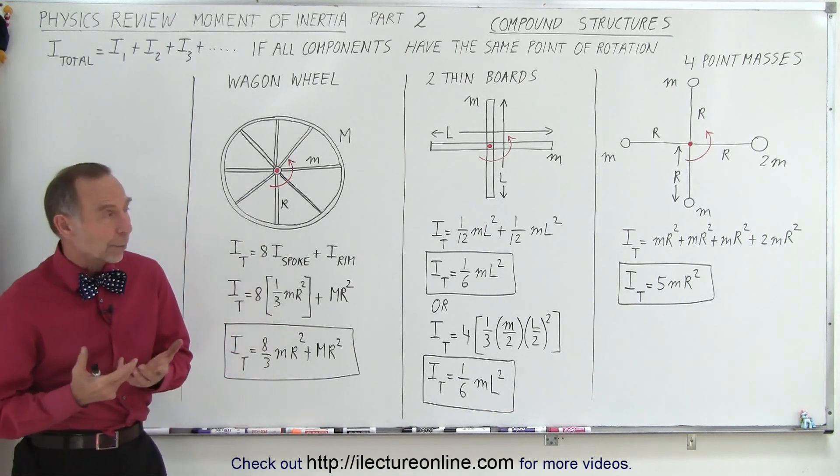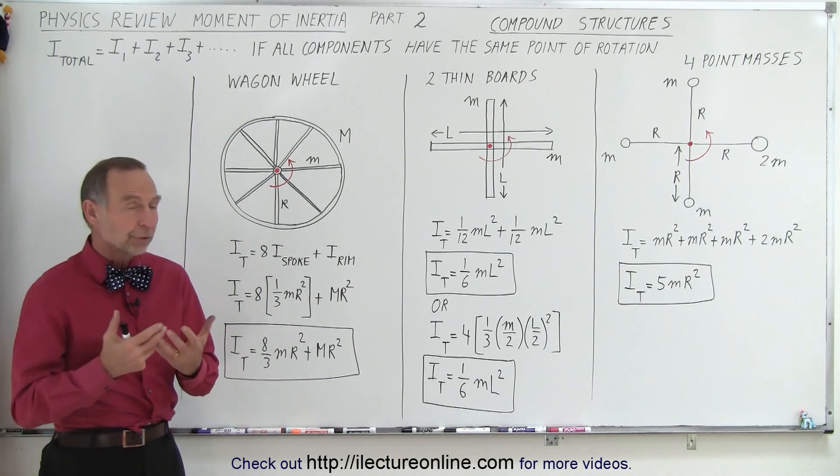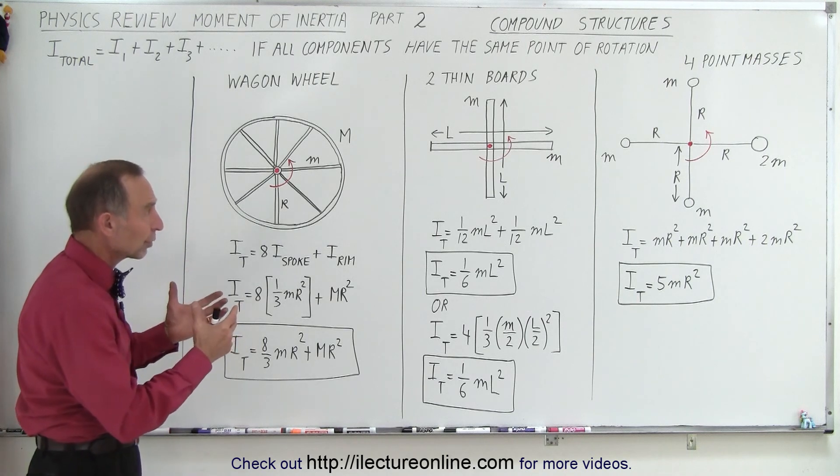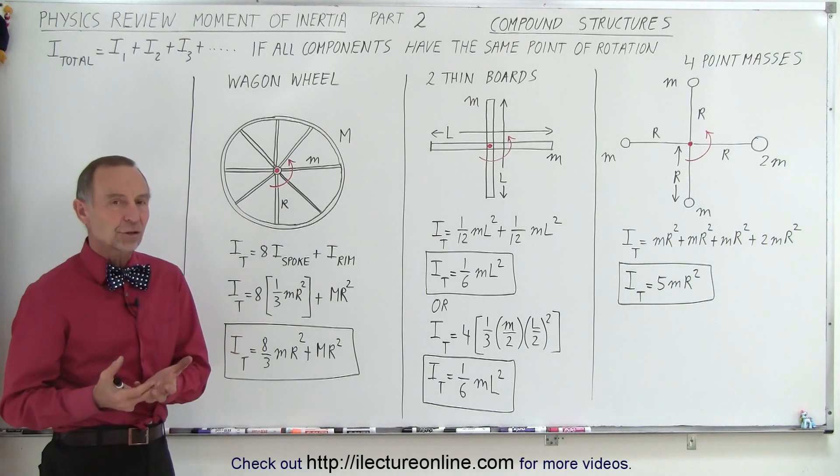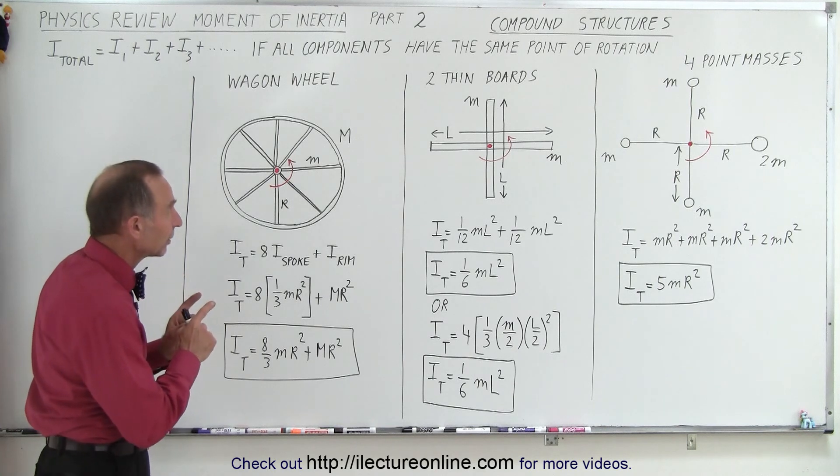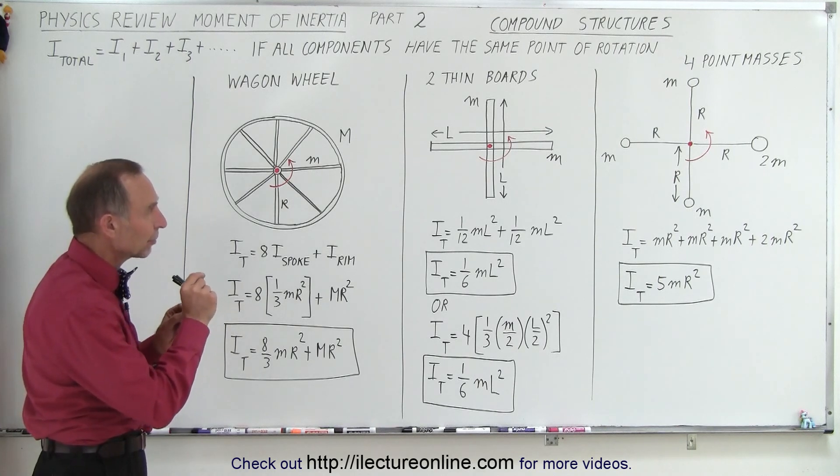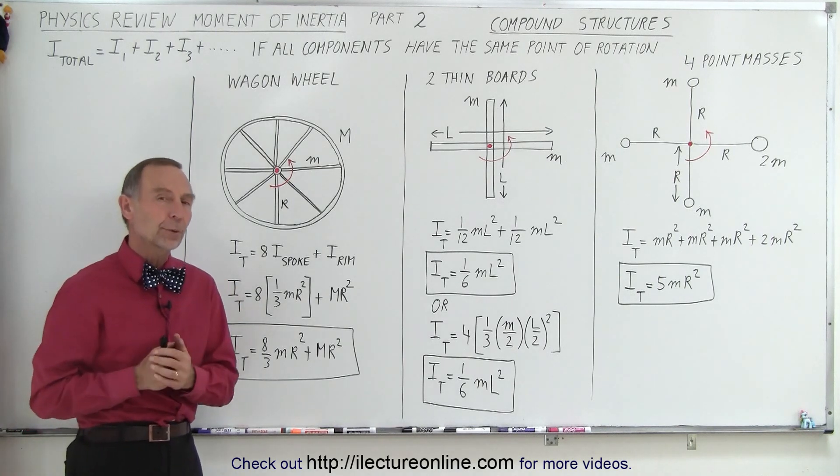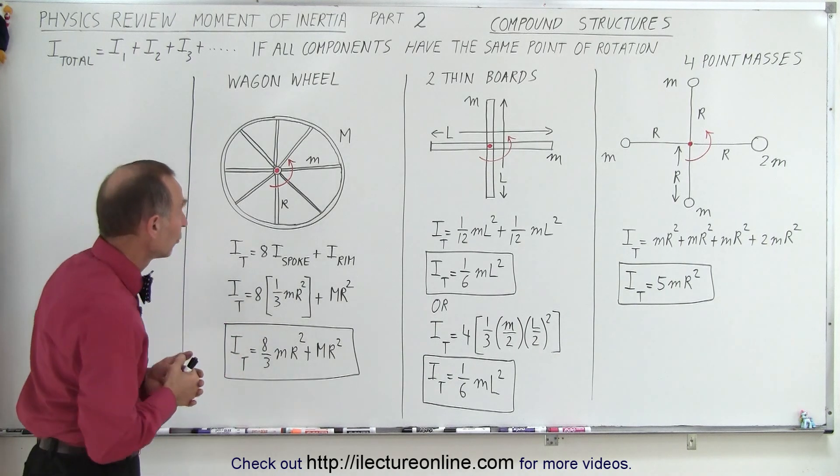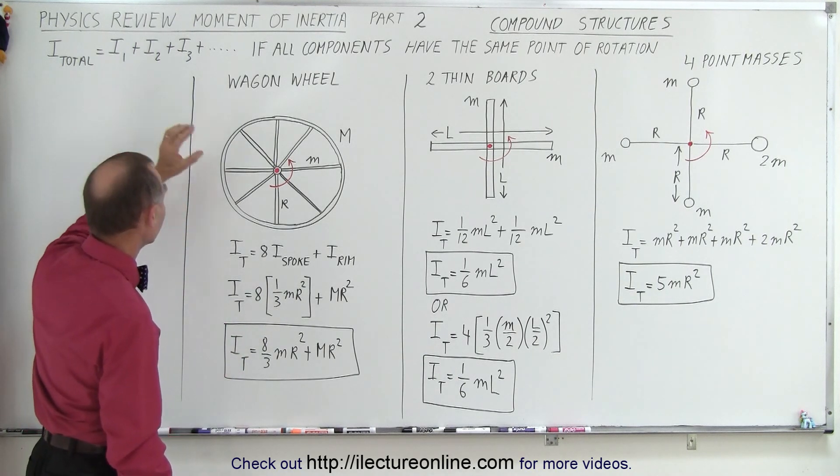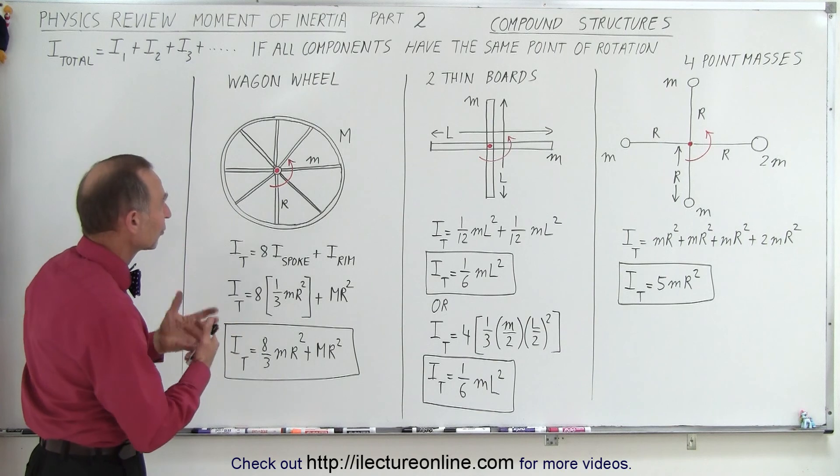So it turns out that when we want to find the moment of inertia of a compound structure, we simply do an algebraic addition. Now that's provided all of the pieces have a common point of rotation, that's really important. So we can simply add the moment of inertia of each piece, and that will then give us the total.